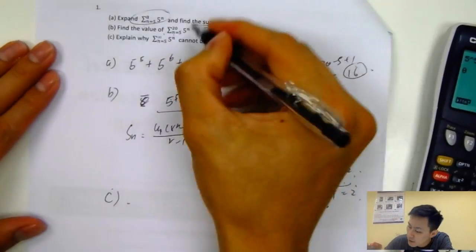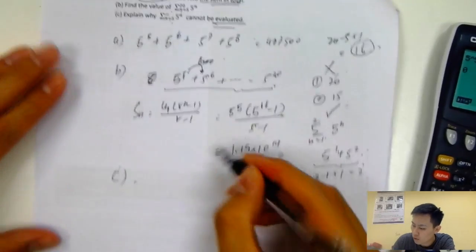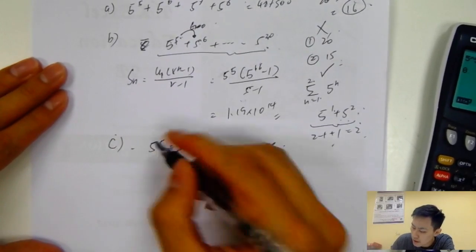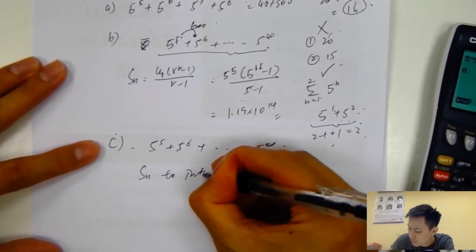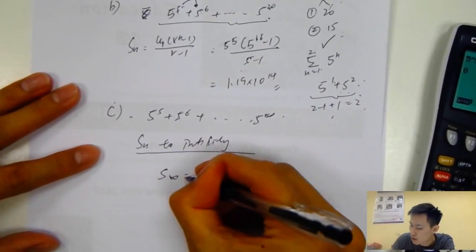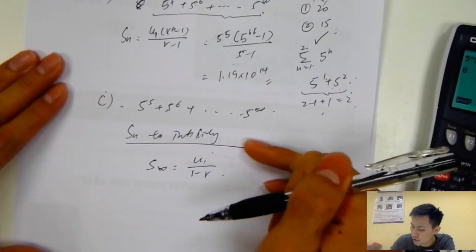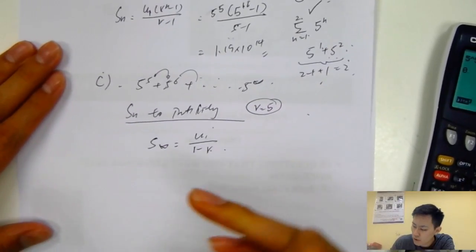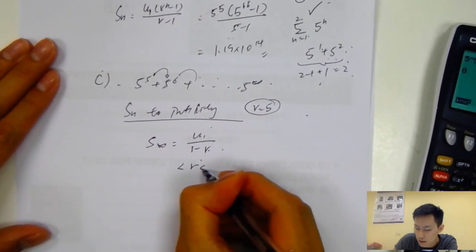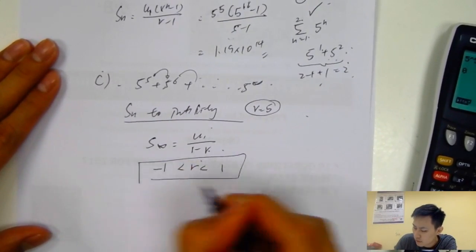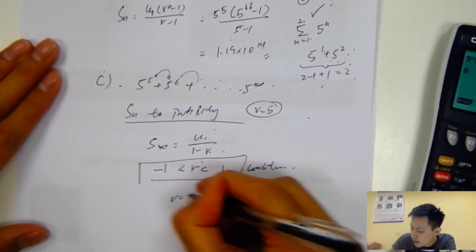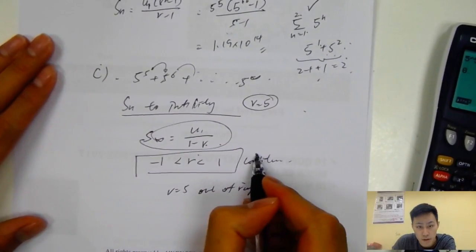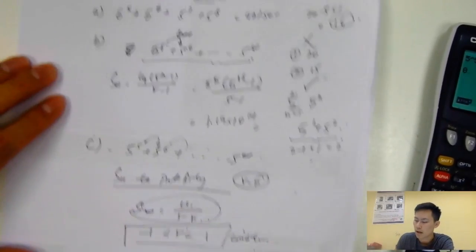For part C, explain why the sum starting from n equals 5 to infinity cannot be evaluated. That implies using the sum to infinity, whose equation is u₁ over (1 minus r), which only applies to geometric sequences. Multiplying by 5 each time gives r equals 5. But when applying this equation, r must be within minus 1 and 1. Since r equals 5 is out of that range, we cannot calculate the answer.